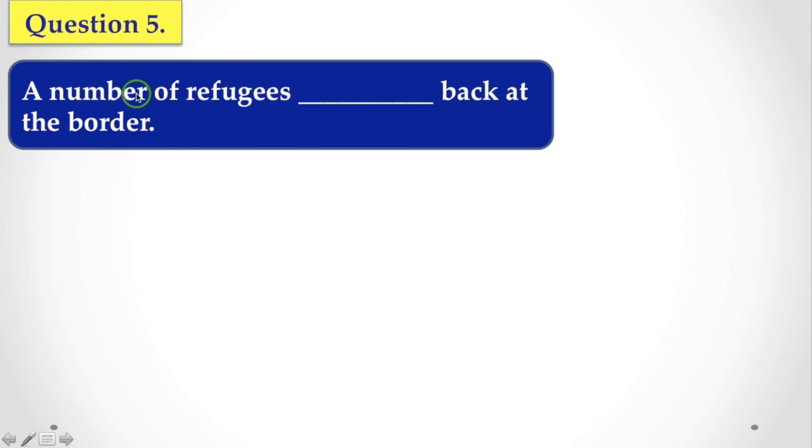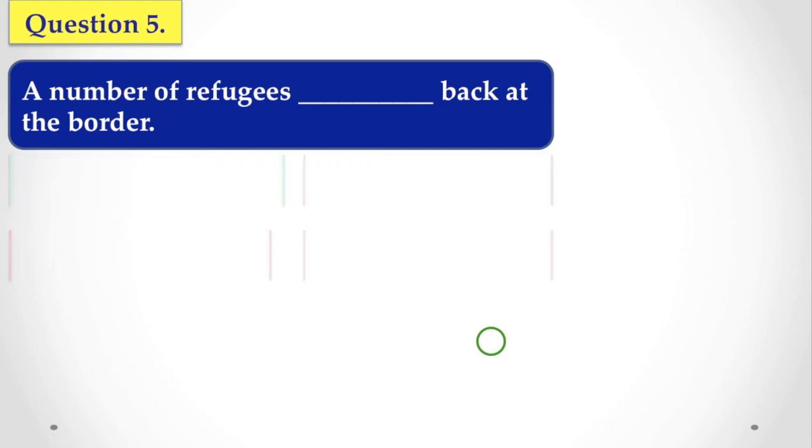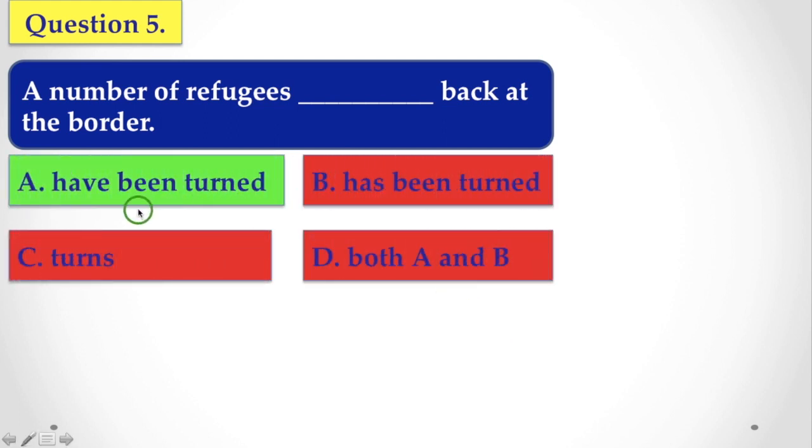Next question for you: A number of refugees back at the border. And the options are: have been turned, has been turned, turns, both A and B. And the correct answer is have been turned.